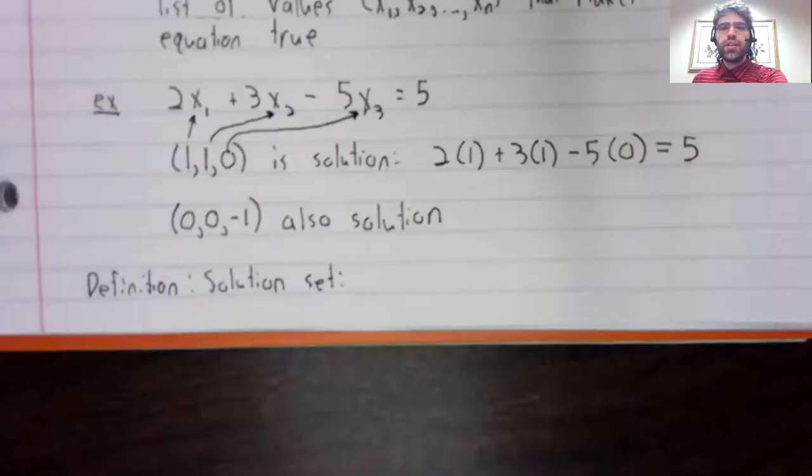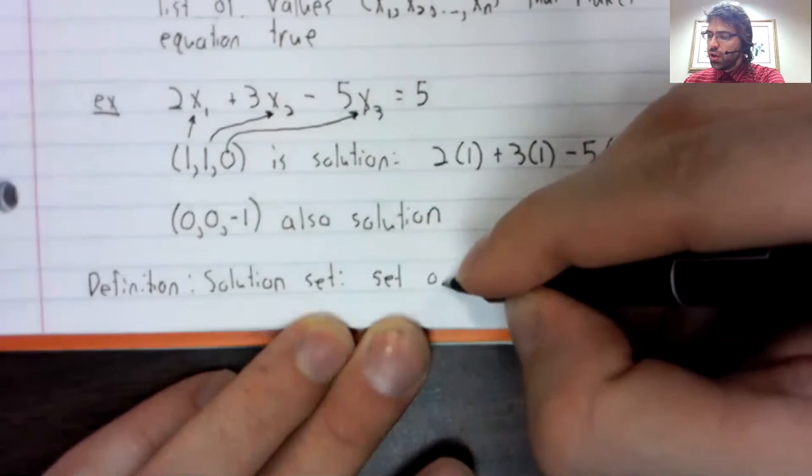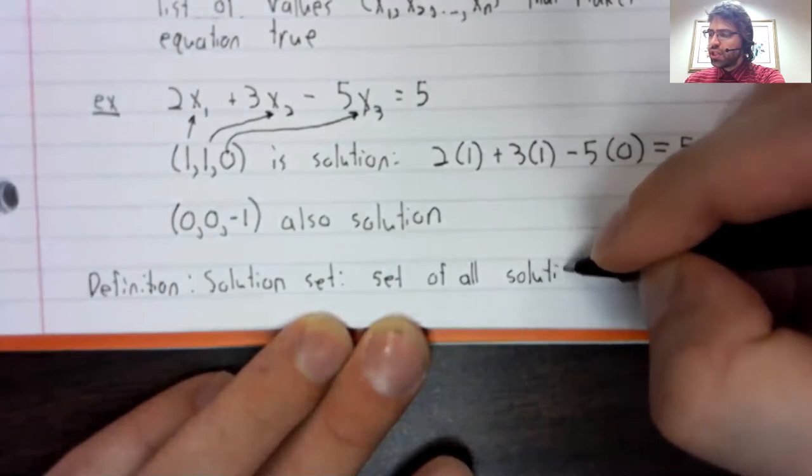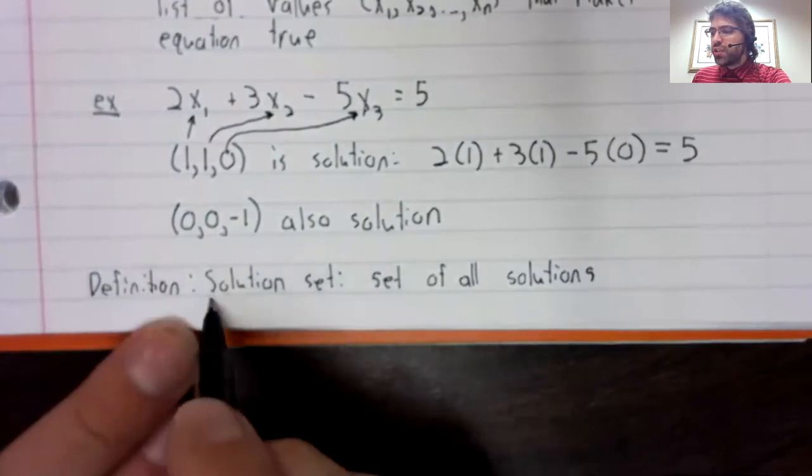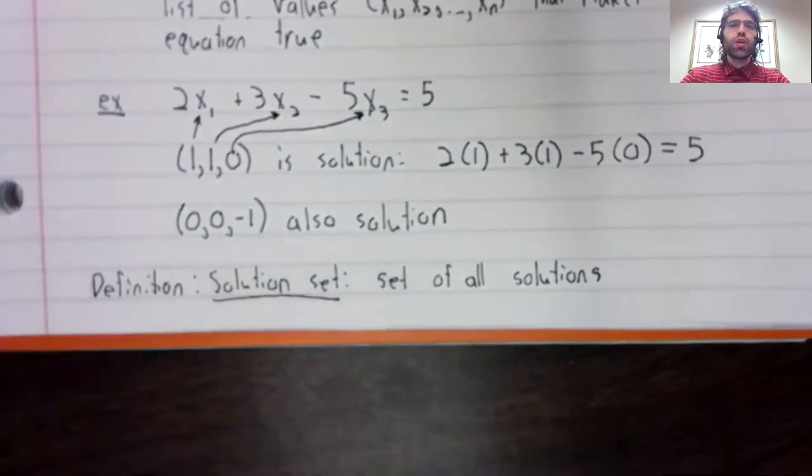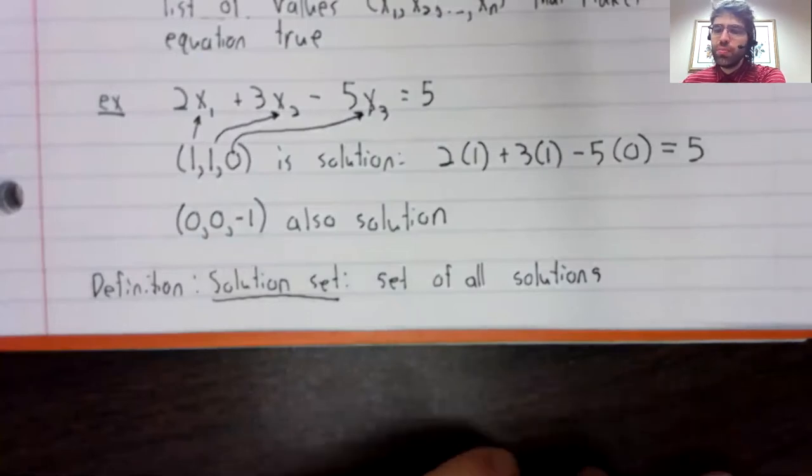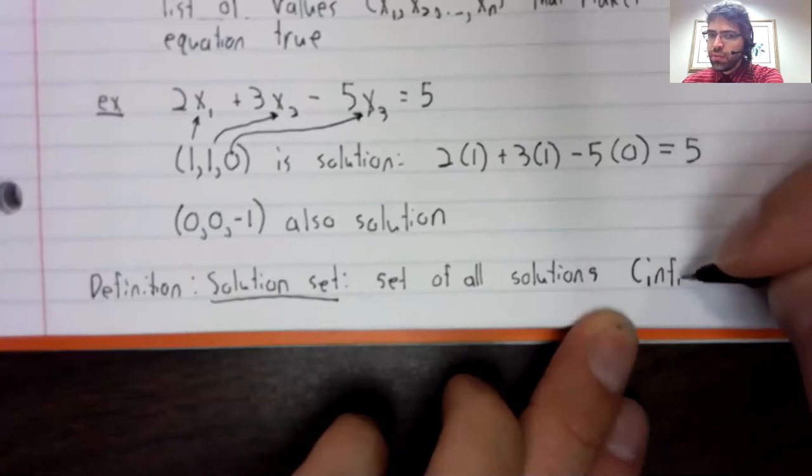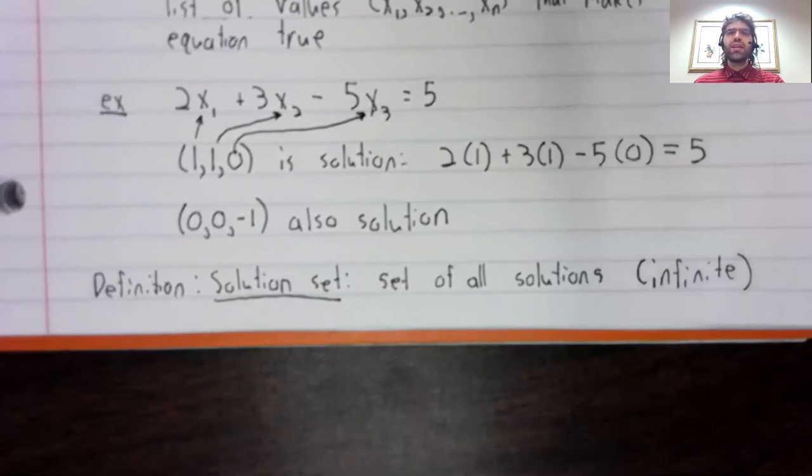Given a linear equation, the set of all its solutions is the solution set of the linear equation. And unless all of the coefficients happen to be zero, any linear equation of two or more variables has an infinite solution set.